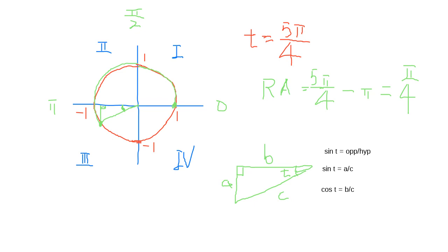What about tangent? Tangent is opposite over adjacent, so it's A over B. And also equal to sine over cosine. Those are the relations.